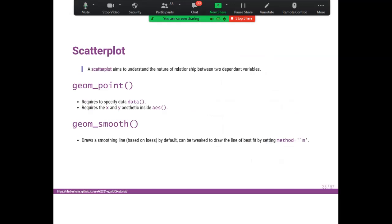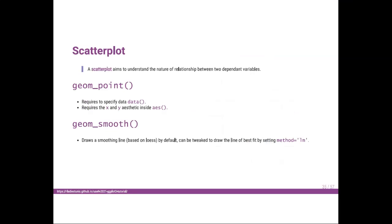Another type of graph is the scatter plot. The scatter plot aims to understand the nature of the relationship between two variables. In ggplot2, we use geom_point() and geom_smooth(). geom_point() requires specifying data and aes(). geom_smooth() draws a smoothing line based on loess by default, and it can be tweaked to draw the best-fit line by setting method — for example, method = 'lm' for linear regression.